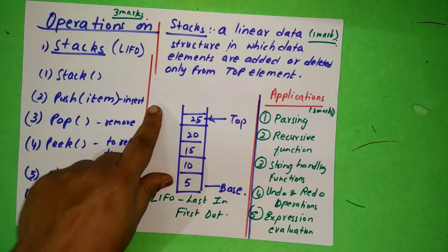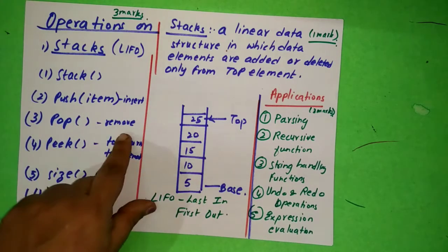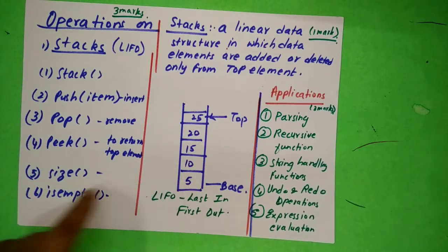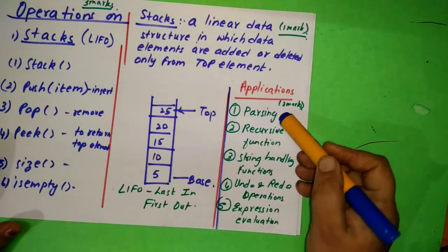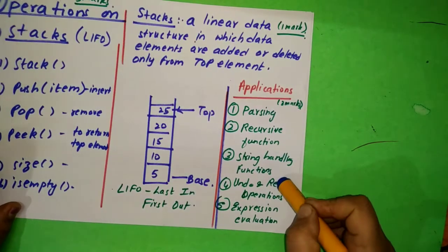You have to say: insert an item inside the stack. If you write complete sentence, you get marks. Pop - to remove an item from the stack. Peek is to return the top element from the stack. Size - to find the size of the stack. Is it clear? And applications also have given here: parsing, recursive function, string handling functions, undo and redo operations, and expression evaluation.